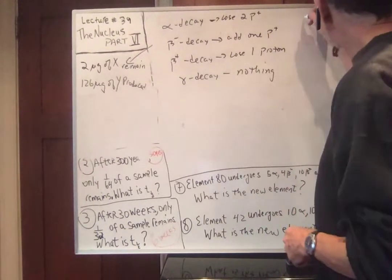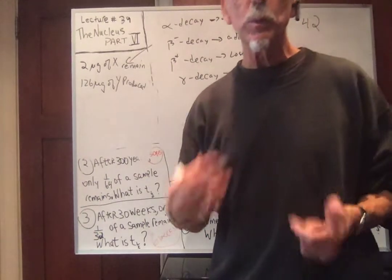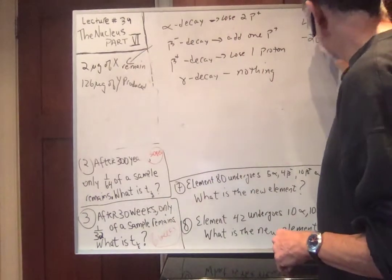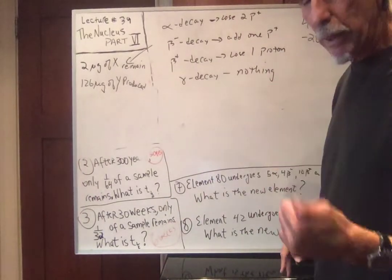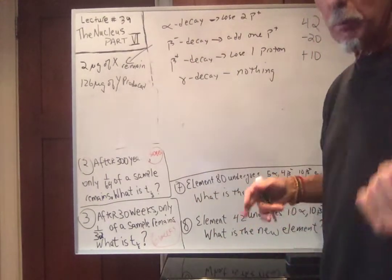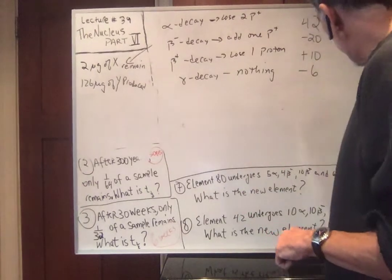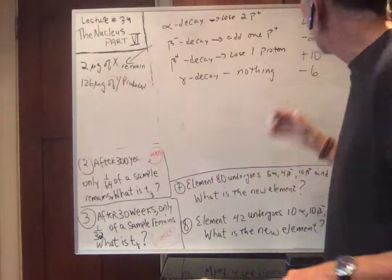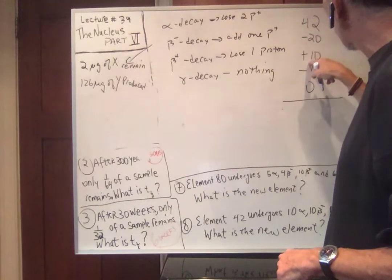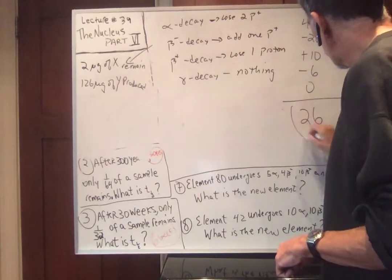Element 42 undergoes 10 alpha, 10 beta minus, 6 beta plus, and 20 gamma decays. Alpha: subtract 20 protons. Beta minus: add 10 protons. Beta plus: subtract 6 protons. Gamma: nothing. So 42 minus 20 plus 10 minus 6 equals 26. The new element is element 26.